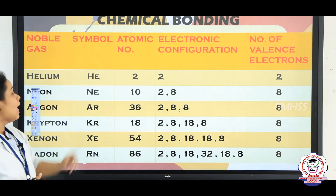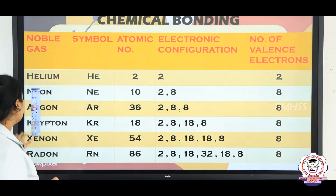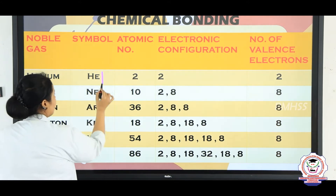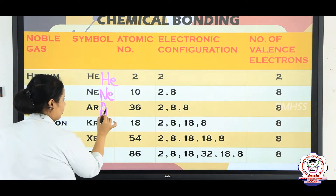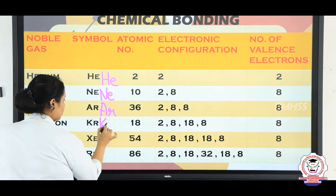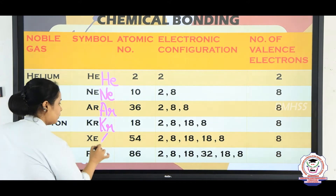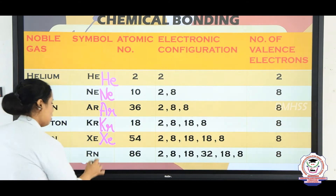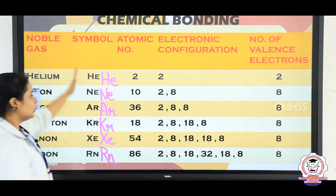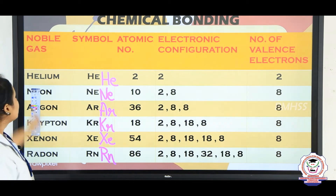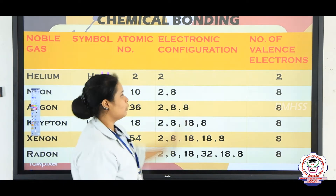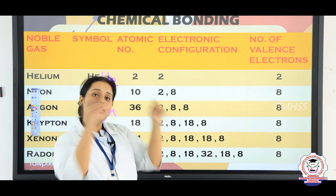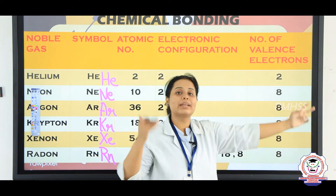The first element is helium and the symbol is He. Then neon will be Ne, argon will be Ar, krypton will be Kr, xenon will be Xe, and radon will be Rn. Helium is having the atomic number 2 and the electronic configuration is 2 — the outer shell will have a maximum of 2 electrons only.